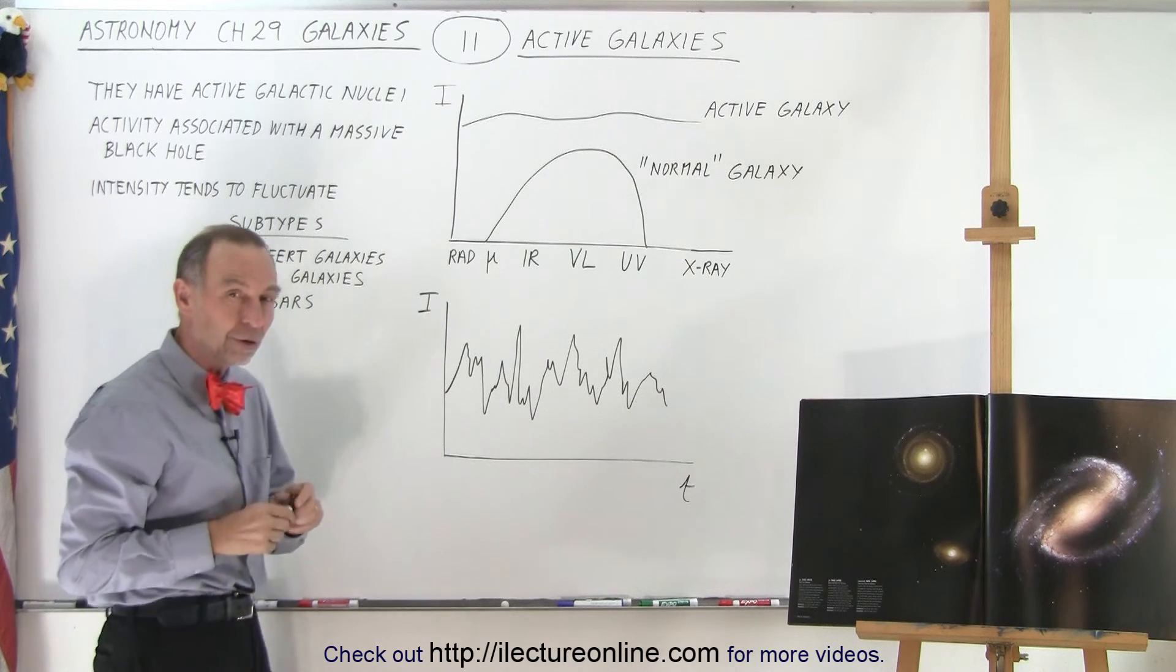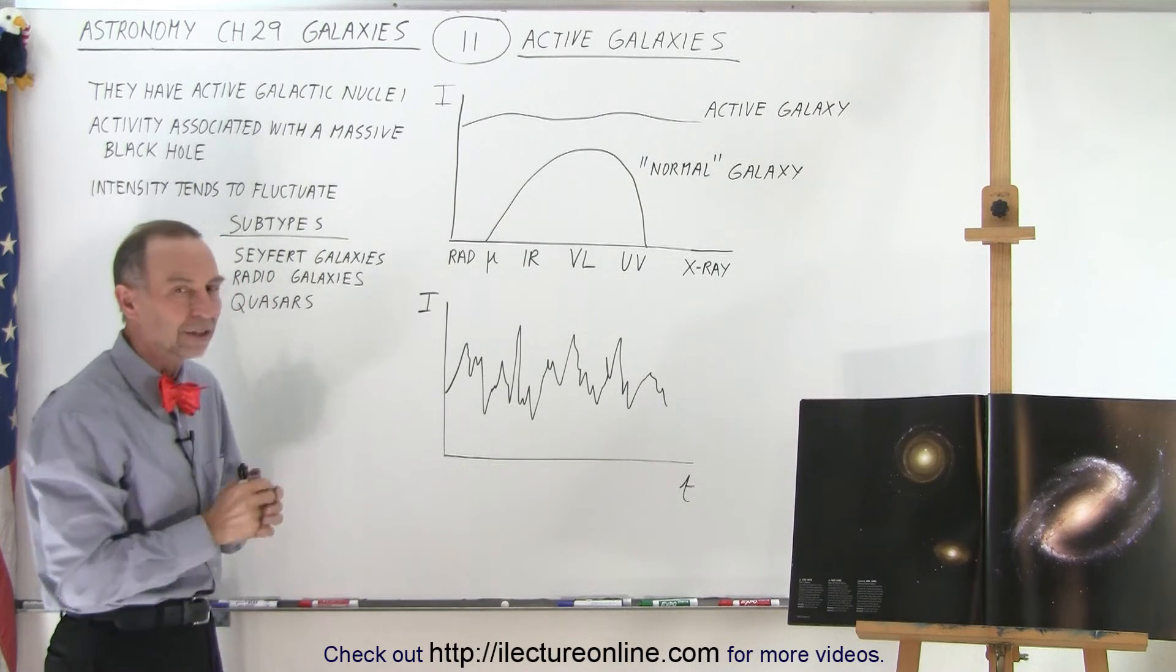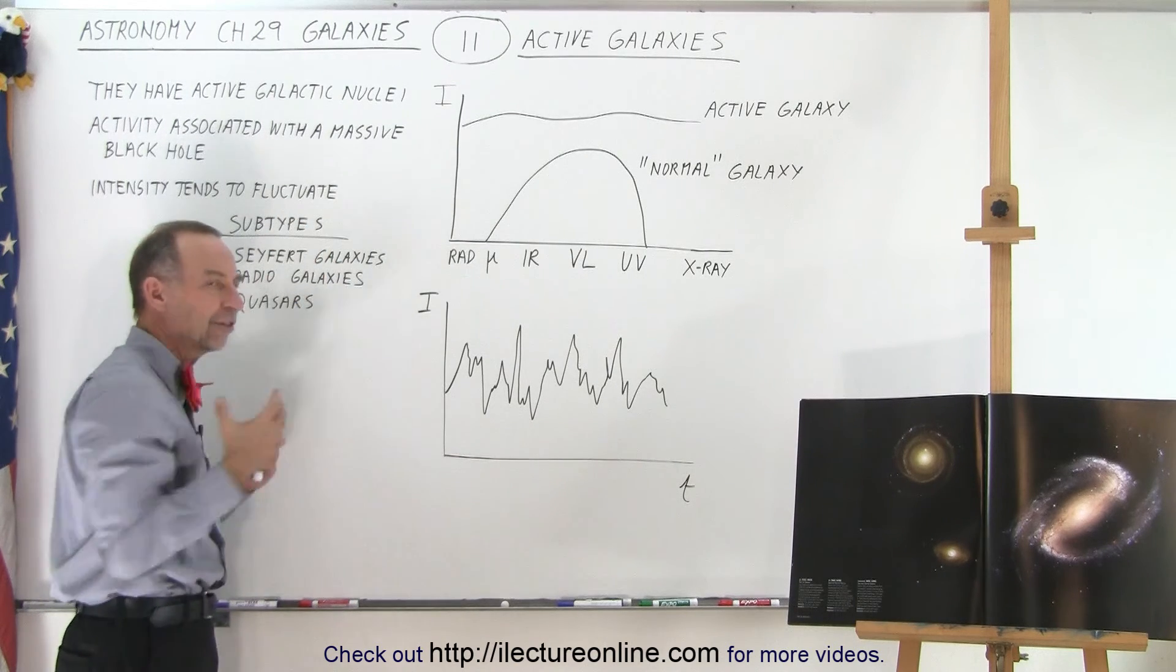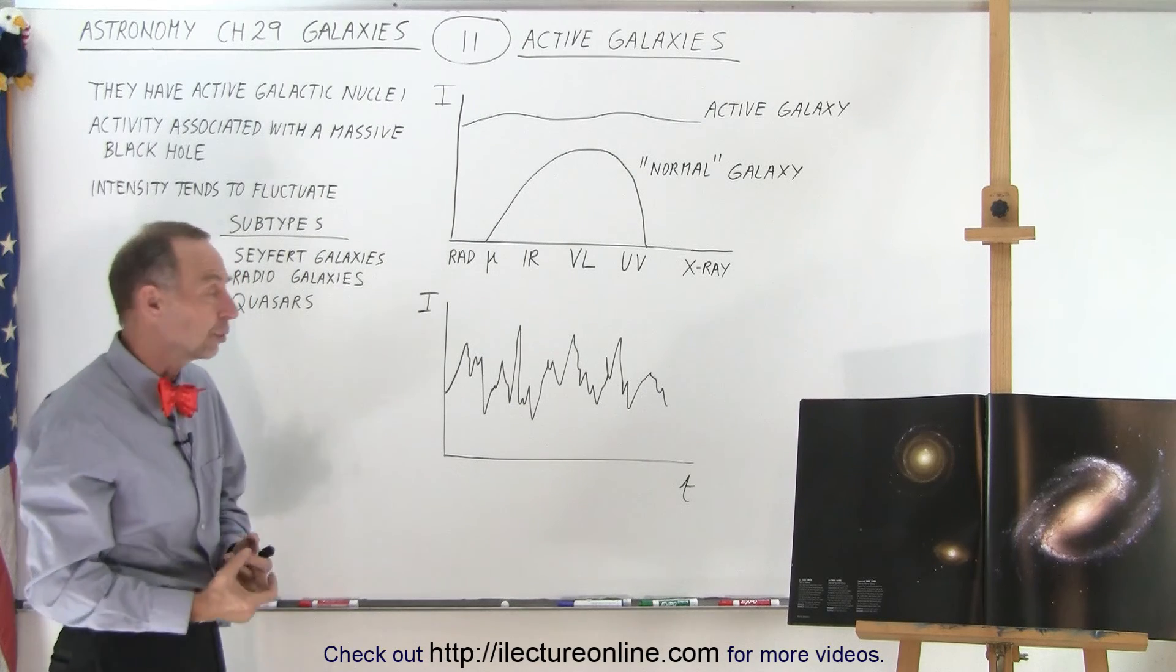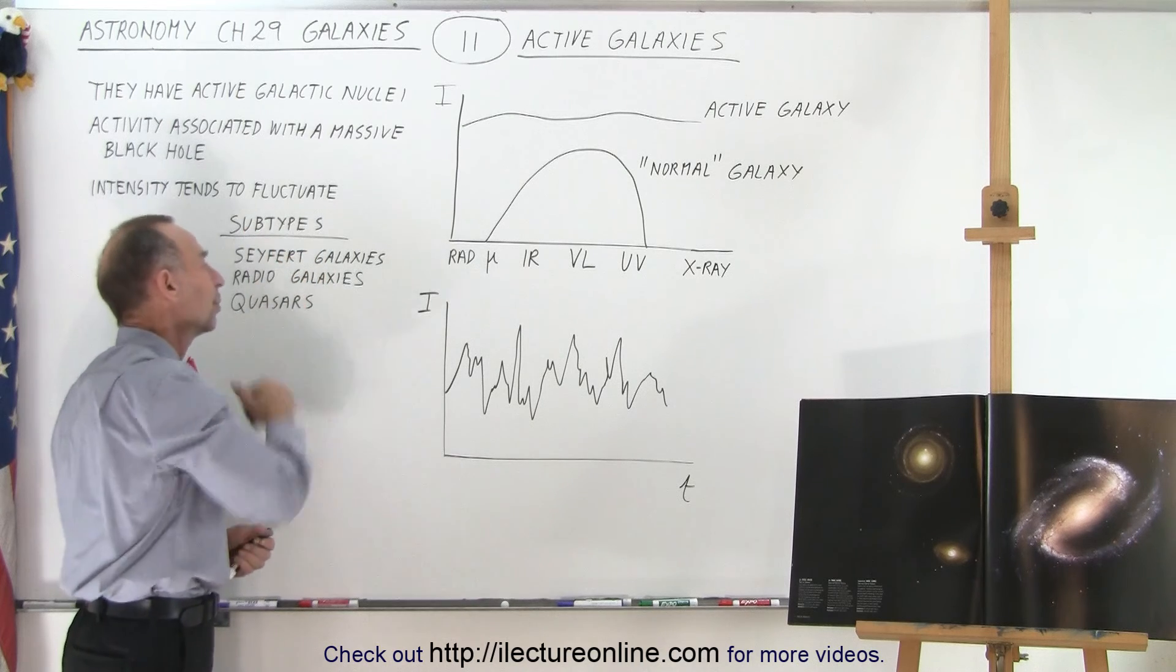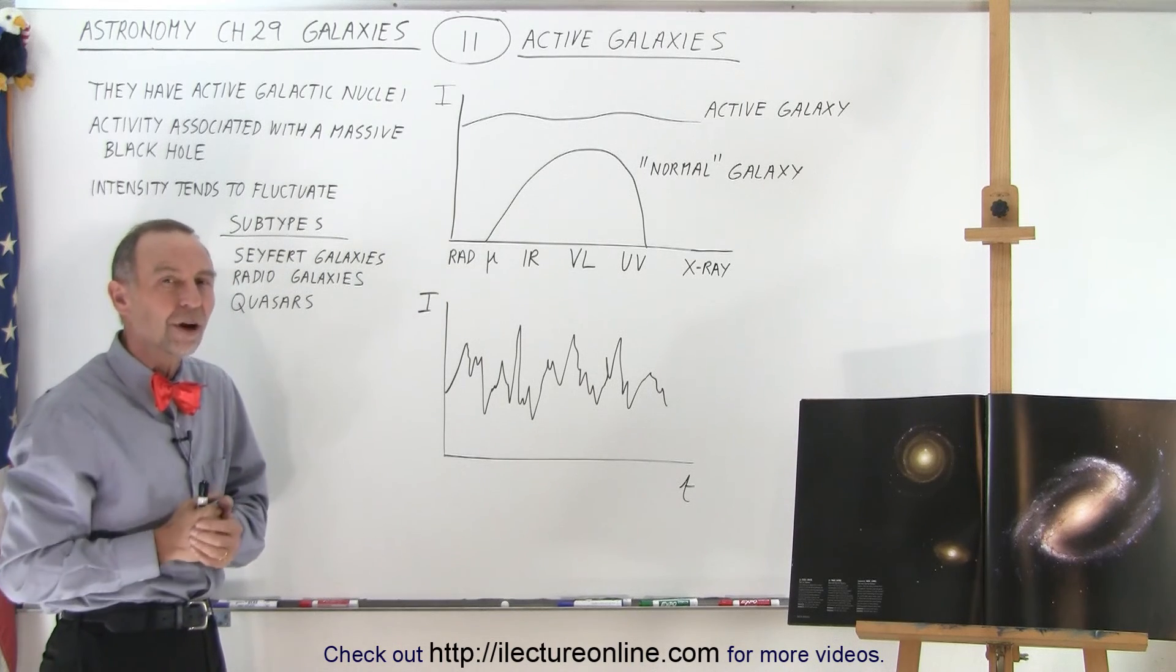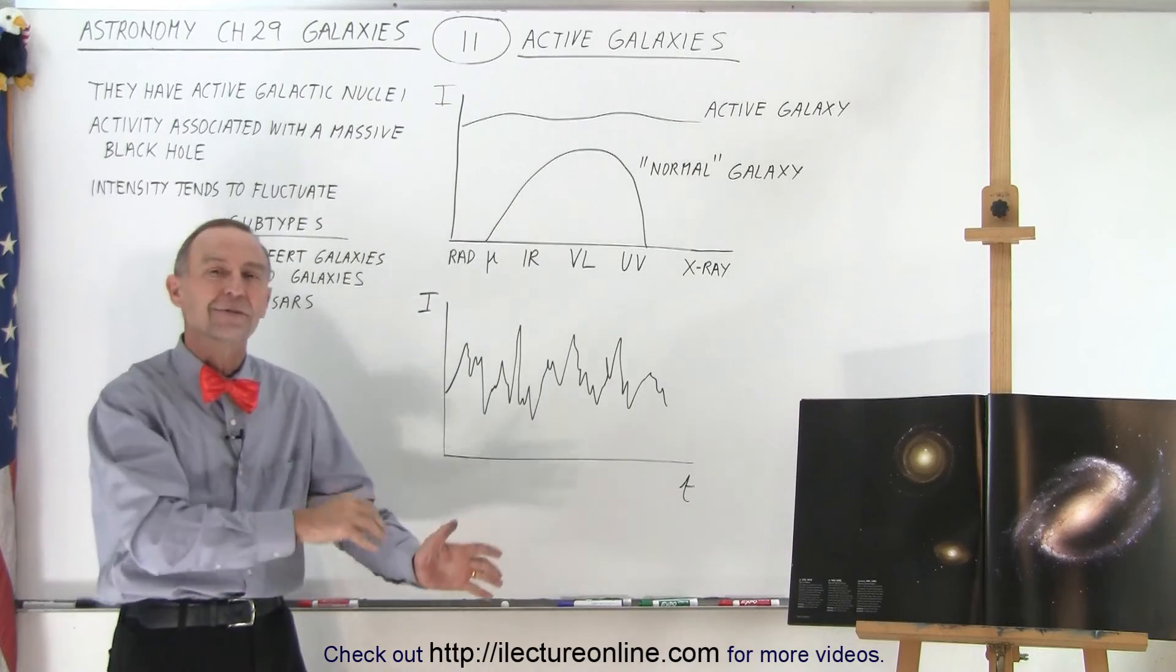We're going to have separate videos talking about the details of those three different kinds of active galaxies. When you hear active galaxy, it's a general term used for all the various galaxies that tend to have black holes at the center where unusual activity occurs. The way it occurs and to what extent it occurs will put it into a subdivision. We'll talk about the details of why we have the three subdivisions and what the differences are between them. Stay tuned and we'll show you how that's done in the next videos to come.